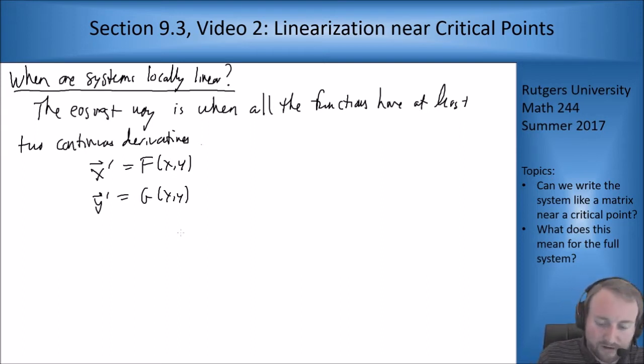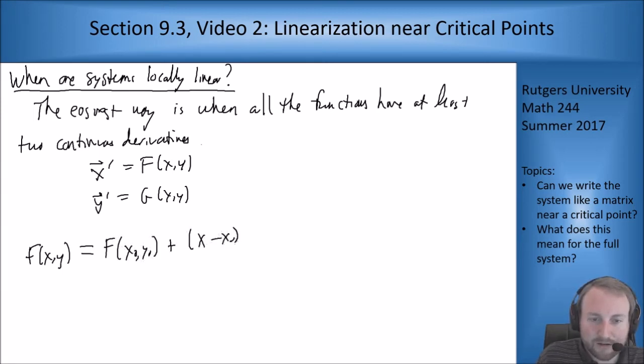If I do multi-variable Taylor series, my function f at (x,y) in terms of a nearby point (x₀,y₀) is f(x₀,y₀) plus (x-x₀)f_x(x₀,y₀) plus (y-y₀)f_y(x₀,y₀) plus some η₁(x,y).